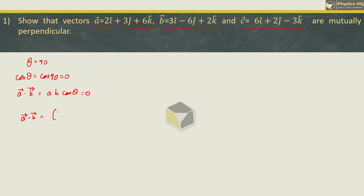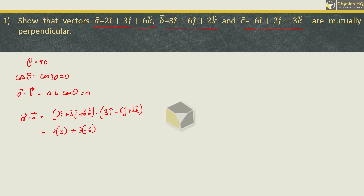For vector a and b: a is given as 2i plus 3j plus 6k, dot product with 3i minus 6j plus 2k. This comes out to be equal to 0. So we can say that a and b are perpendicular to each other.